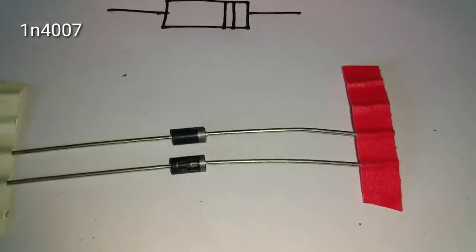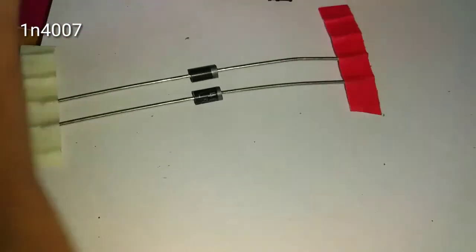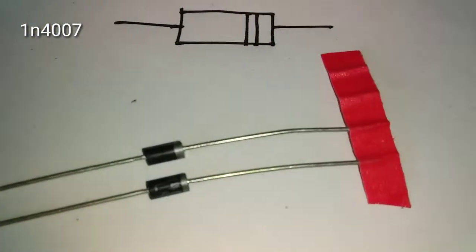This is a 1N4007 diode. This is the positive side and this is the negative side, marked by the silver color.